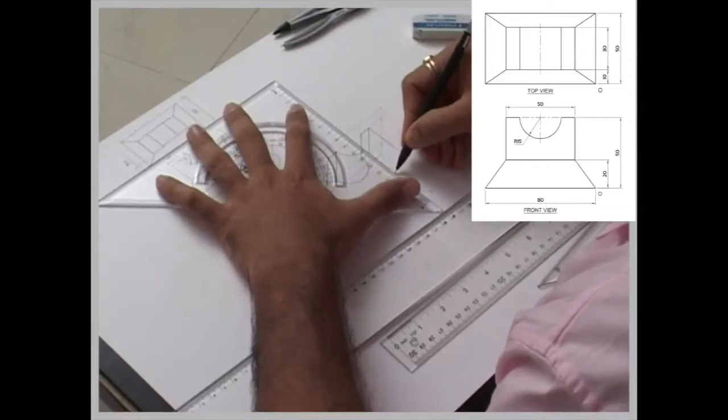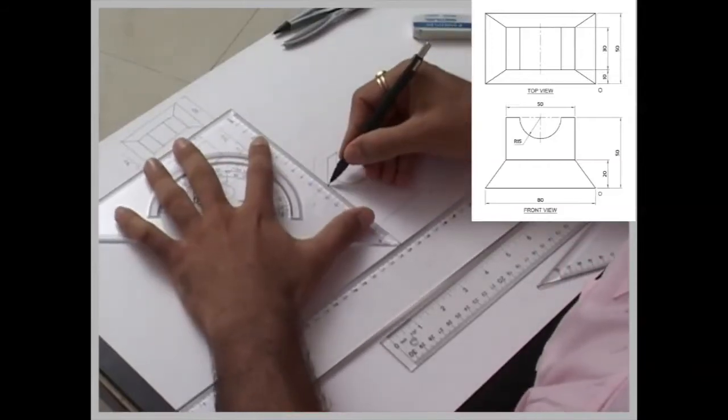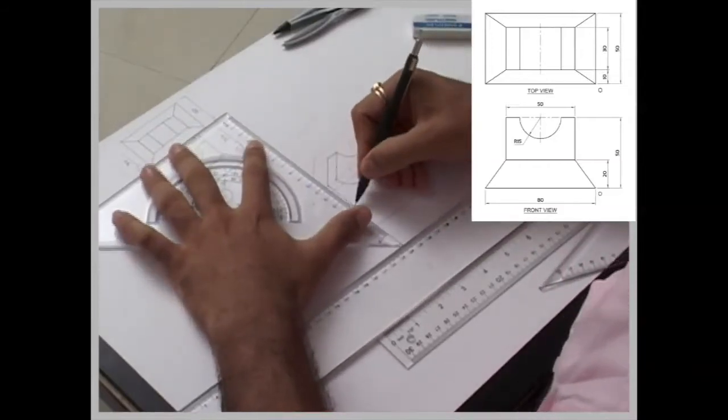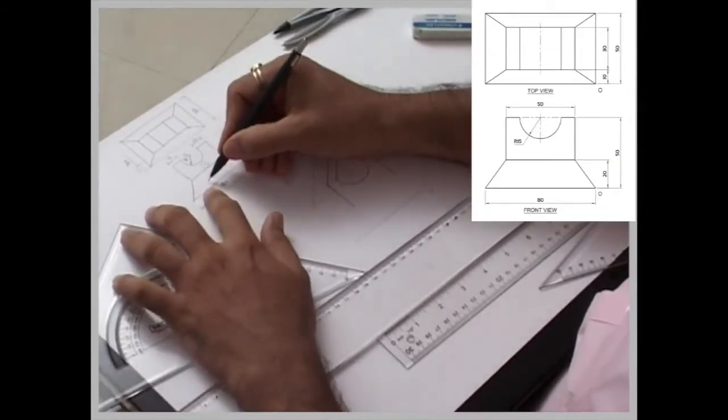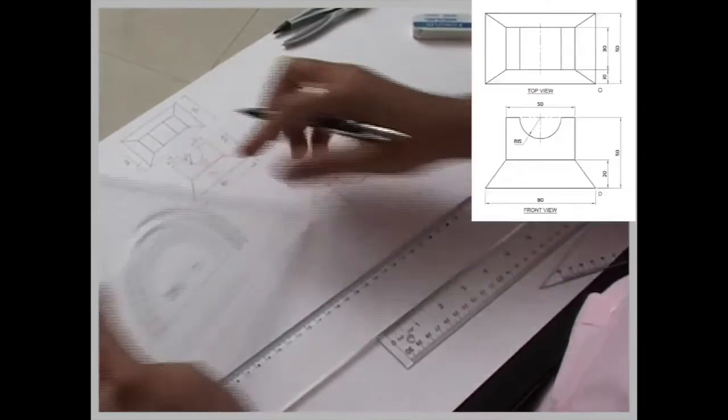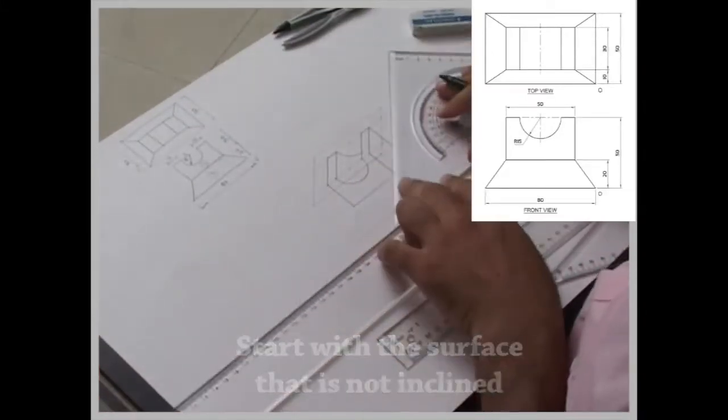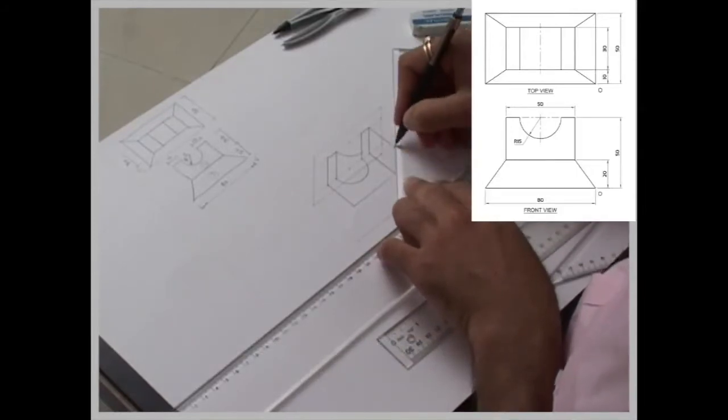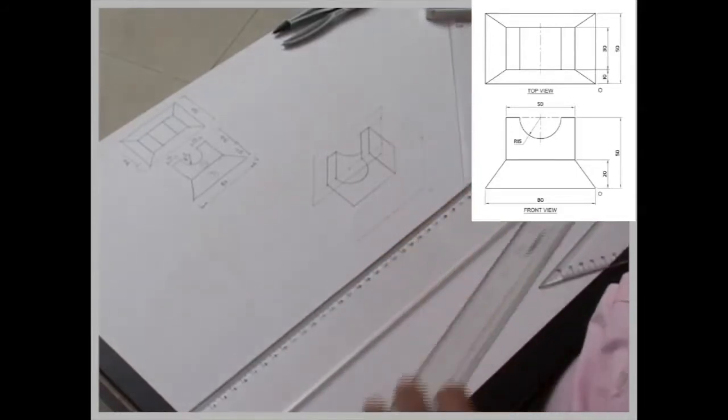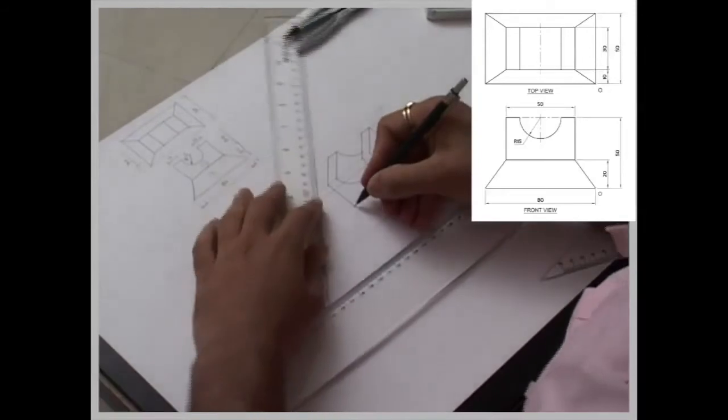Now why we are doing surface number 2 first? Because if you see surface number 1 is inclined in both the views: in this view is also inclined, in this view is also inclined. It is like this, so it is better to start with surface number 2. And then we will draw this to all the corners.